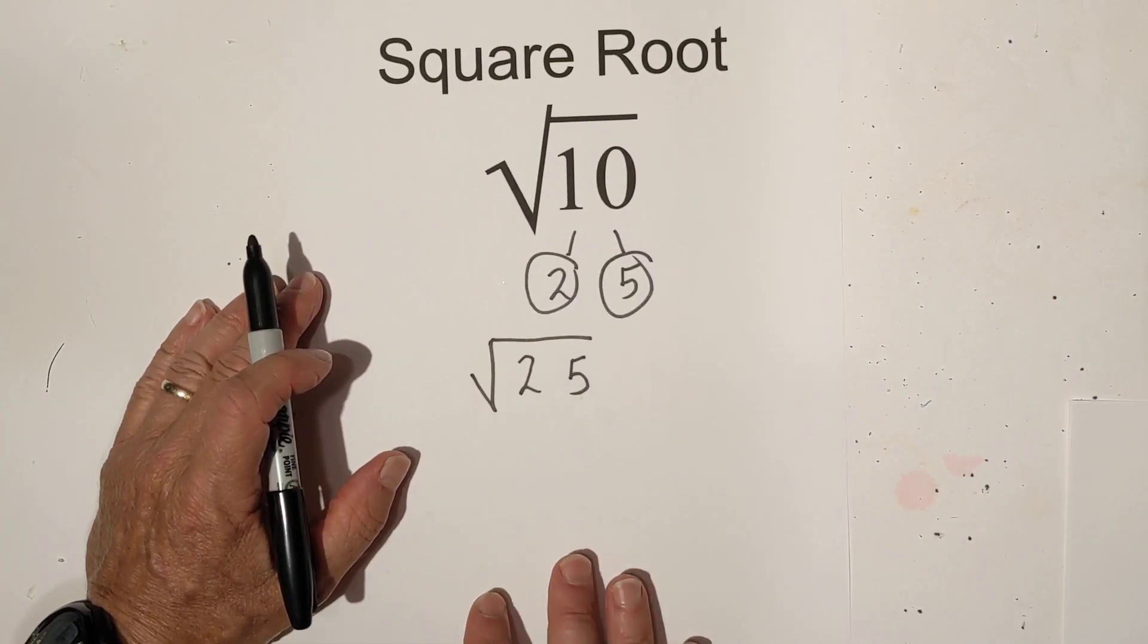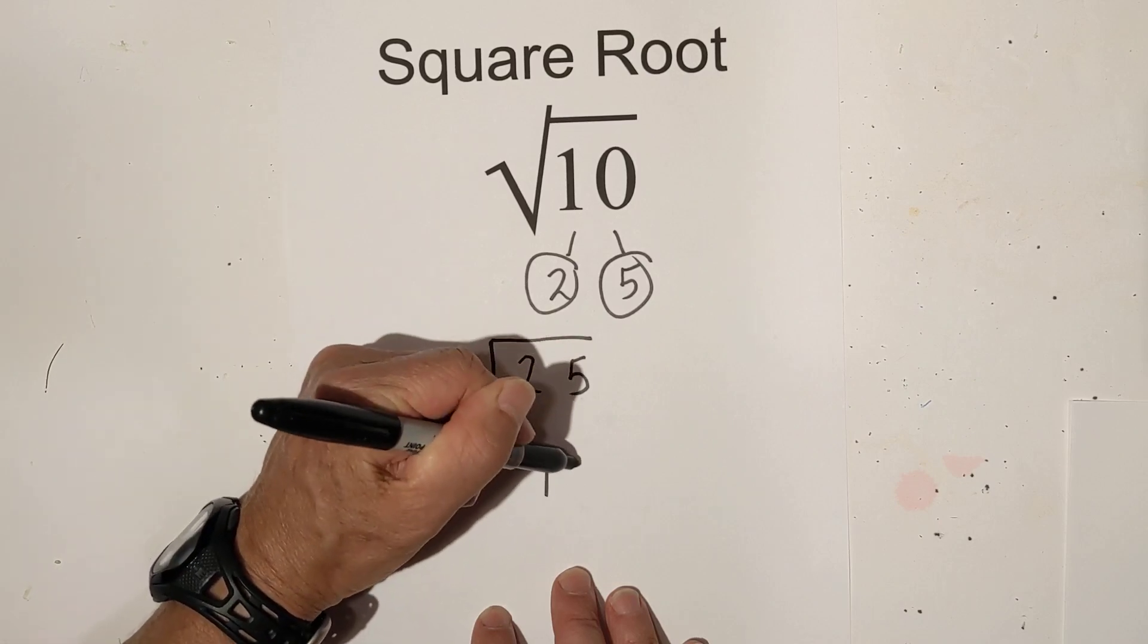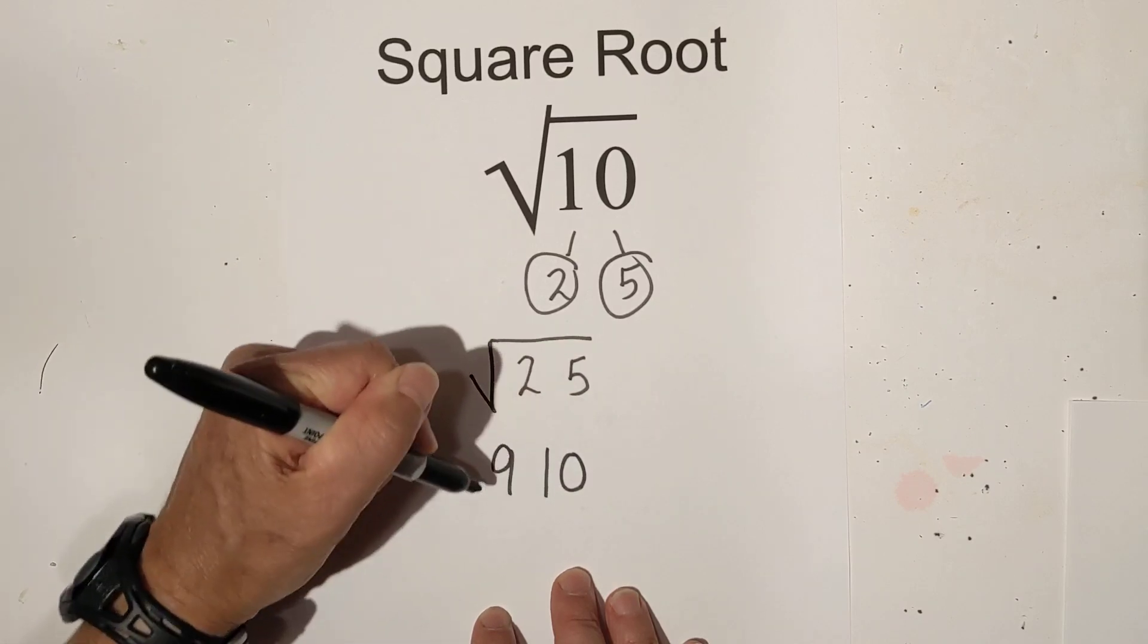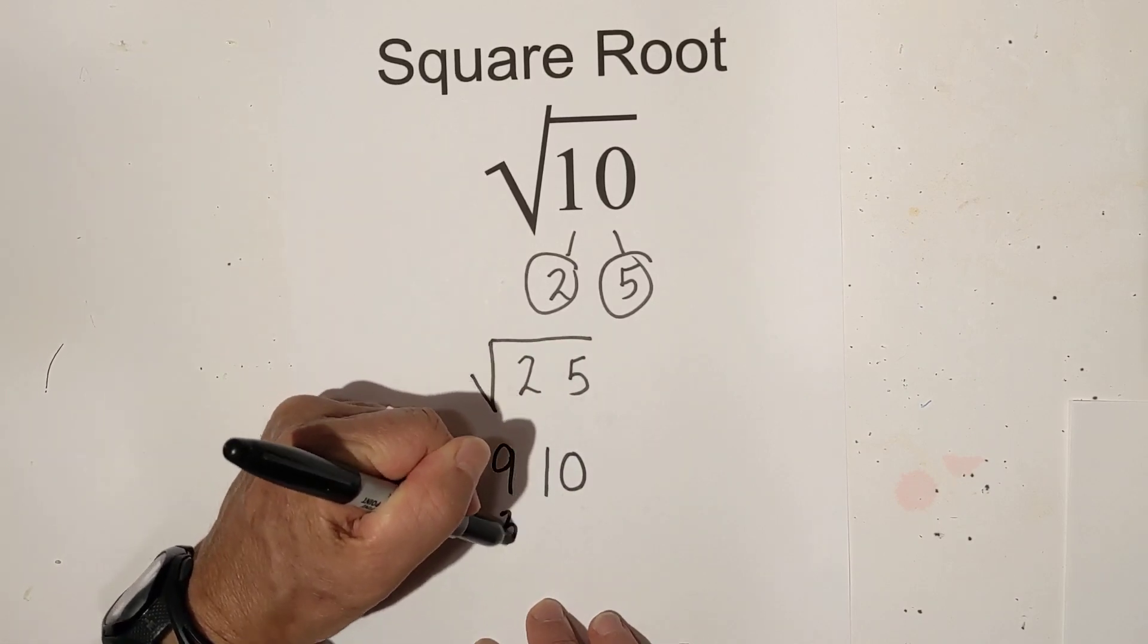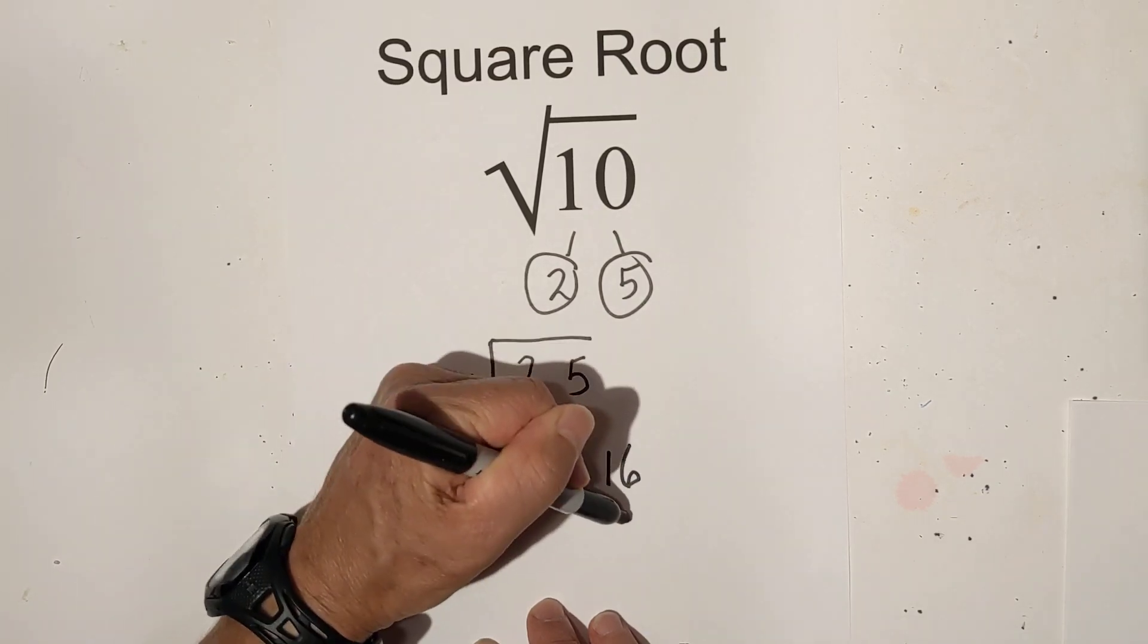Now, if you want to estimate what the square root is, you have 10 and you know that the square root of 9 is 3 and the square root of 16 is 4.